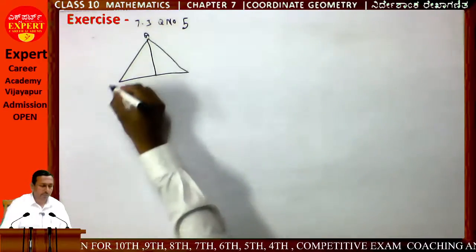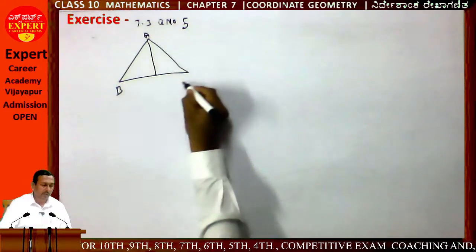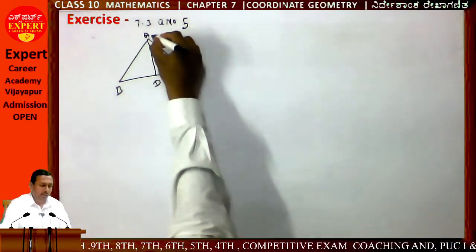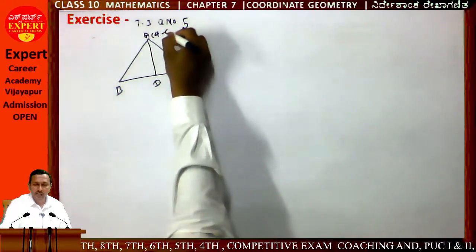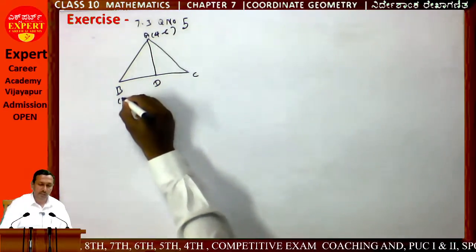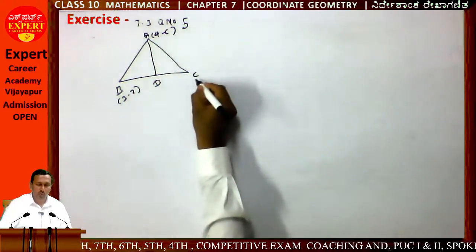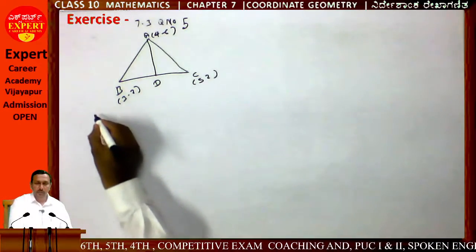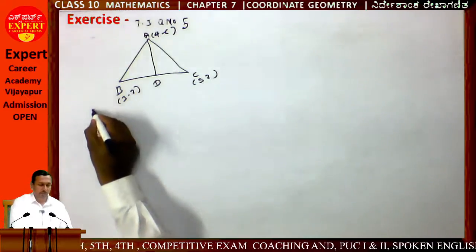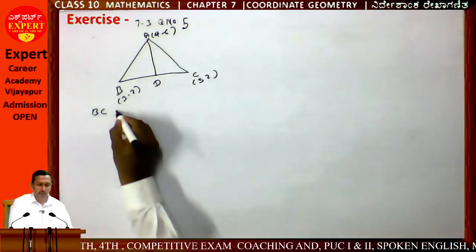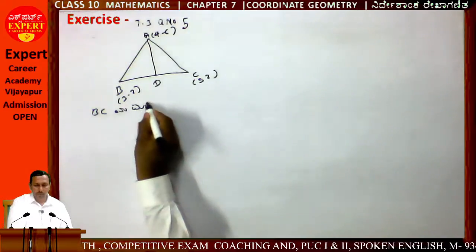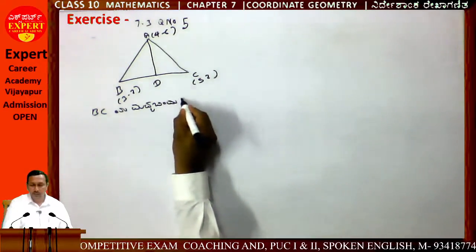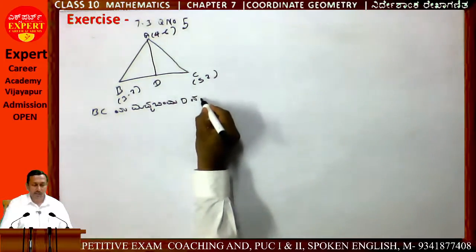Label the diagram: A, B, C, D. A is (4,-6), B is (3,-2), C is (5,-2). Define D as the midpoint of BC — find its coordinates.